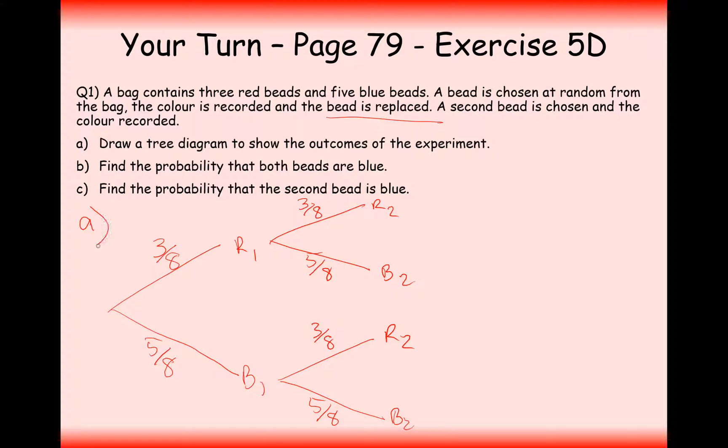Part B is to find the probability that both beads are blue. Well, in that case, we want to go along this branch here. So we're going to times these two probabilities together. B1 and B2 is going to be five times five is 25 over eight times eight, which is 64.